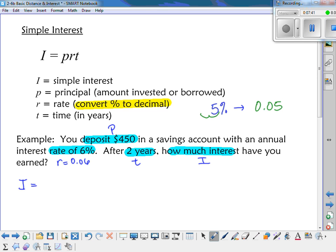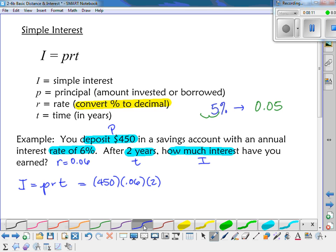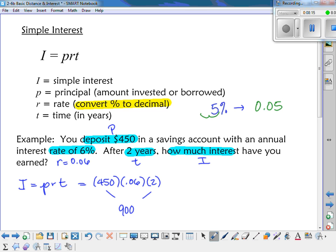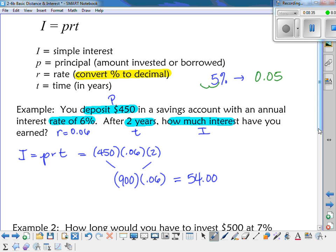So I equals P, R, T. So the principal we said was 450. The rate was 0.06. And the time was 2. Now, multiplication is commutative. What that means is it doesn't matter what order we do it in. I could do 450 times 0.06 and then double it. I could do 0.06 times 2 and then times 450. Or I can just multiply 2 times 450 because that's really easy for me to do in my head. That's 900. So I'm going to do, now I've got 900 times 0.06. So what's 9 times 6? 54. And so it's 54.00 because of the two decimal places. And so the interest that we earned was $54.